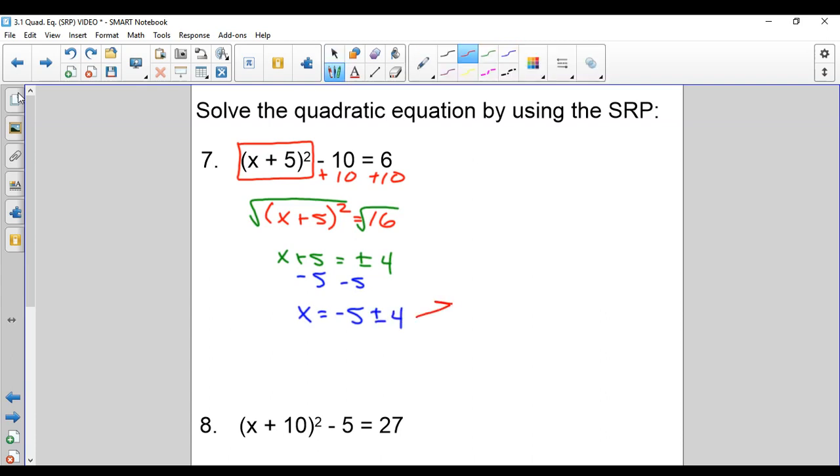Again, we have two answers. We have negative 5 plus 4, which is negative 1. We have negative 5 minus 4, which is negative 9. There's our two solutions.